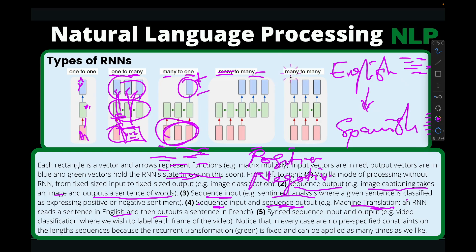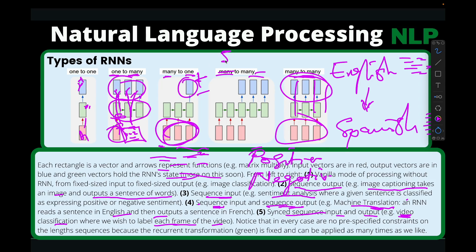There is another many-to-many where as many inputs are given as outputs, and they are synced as well — synced sequence input and output. An example is video classification, where we wish to label each frame of the video. In the video, you might have, say, five frames, and then we want to classify each of those five frames, ending up with five outputs as well. These are the various types of RNNs that we have.